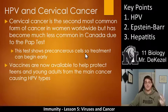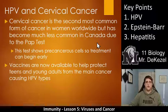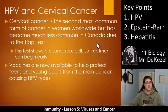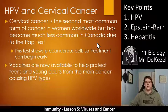Cervical cancer is the second most common cancer in women worldwide, but it has become a whole lot less common in Canada due to a couple of things. One is the pap test, which shows precancerous cells so treatment can begin early, sometimes even before cancer has developed. We also have a vaccine against many different human papillomaviruses, and vaccines are now available to help protect teens and young adults from the main cancer-causing HPV types.